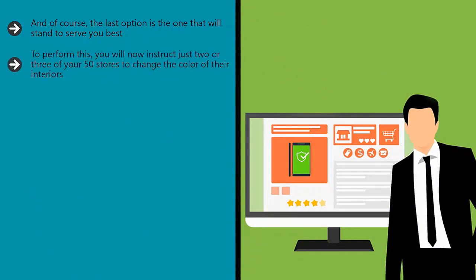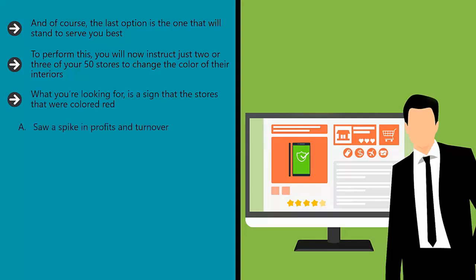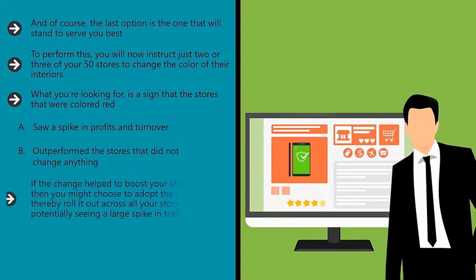To perform this, you will now instruct two or three of your 50 stores to change the color of their interiors. You'll then monitor the progress of those stores for the next six months and then collect all the data together to see what it can tell you. What you're looking for is a sign that the stores that were colored red saw a spike in profits and turnover, and outperformed the stores that did not change anything. If the change helped to boost your store's success, then you might choose to adopt the change and roll it out across all your stores, potentially seeing a large spike in traffic.